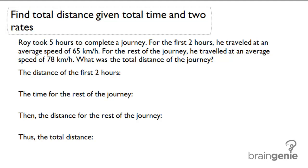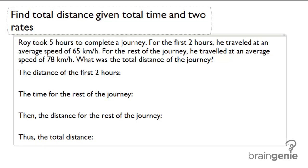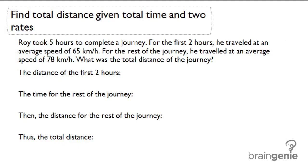Find total distance given total time and two rates. Roy took five hours to complete a journey. For the first two hours, he traveled at an average speed of 65 kilometers per hour. For the rest of the journey, he traveled at an average speed of 78 kilometers per hour. What was the total distance of the journey?